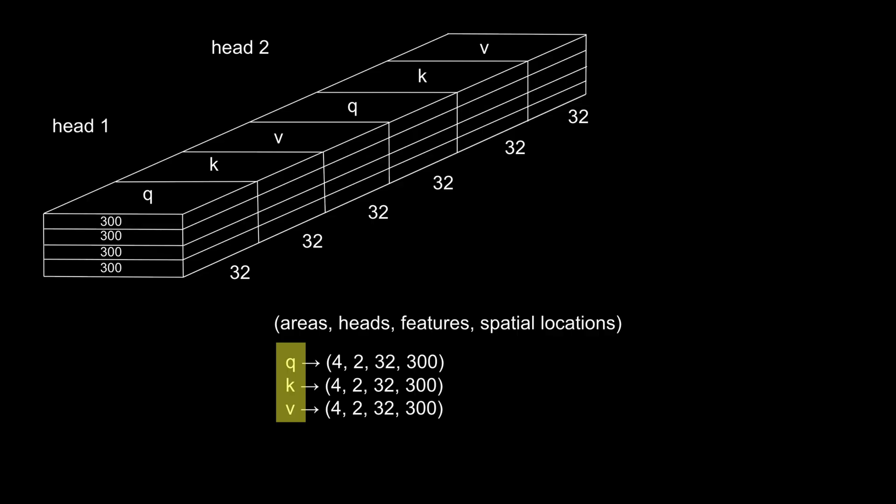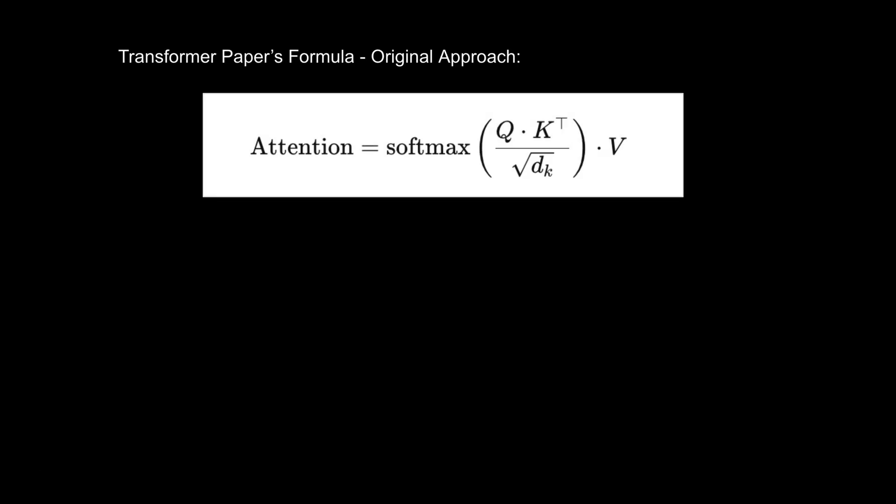Now that we have our queries, keys, and values, we're ready to introduce the attention formula that ties them together. The standard formula follows the scaled dot product attention mechanism. Here's how it works: the query is multiplied by the transpose of the key, the result is scaled by the dimension of the key vectors, it's then passed through a softmax function to compute attention weights. These weights are applied to the values to produce the final output. This approach is foundational to many state-of-the-art models, like GPT.